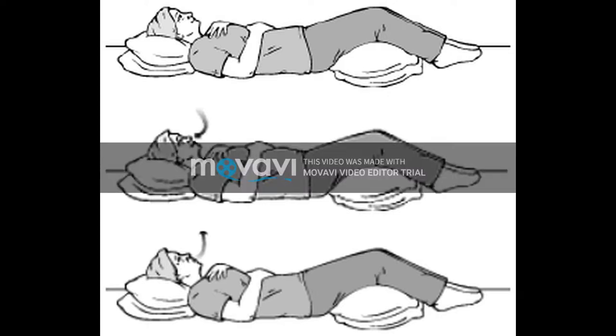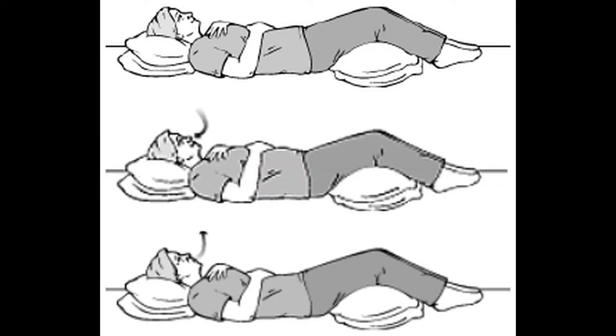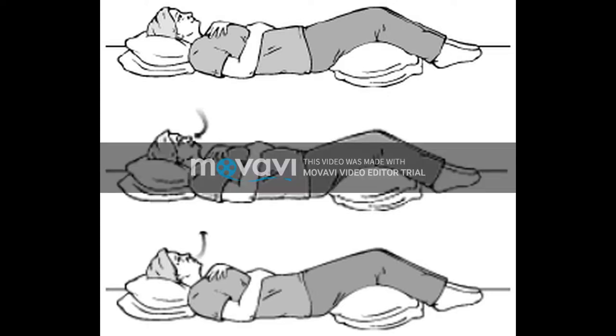Keep your head supported. You can use a pillow under your knees to support your legs. Place one hand on your upper chest and the other just below your rib cage. This will allow you to feel your diaphragm move as you breathe.